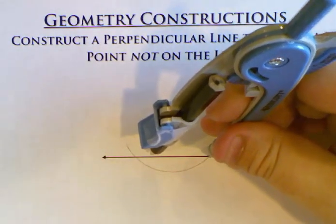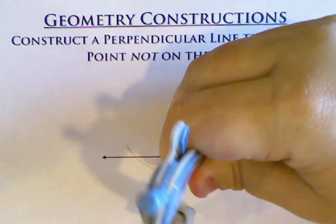So take your compass, open it up to about three quarters or so and make two arcs down here.